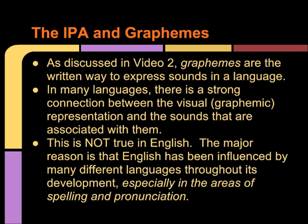As discussed in video 2, graphemes are the written way to express sounds in a language. In many languages, there is a strong connection between the visual, or graphemic, representation and the sounds that are associated with them. This is not true in English. The major reason is that English has been influenced by many different languages throughout its development, especially in the areas of spelling and pronunciation.